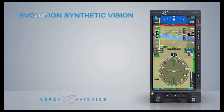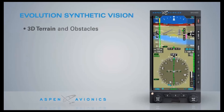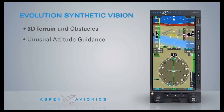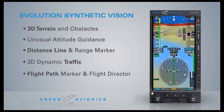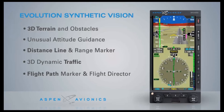Evolution Synthetic Vision includes all of the features aircraft operators expect of synthetic vision systems, including 3D terrain and obstacles, unusual attitude guidance, distance line and range marker, 3D dynamic traffic display, and flight path marker and flight director symbology. These display elements are all designed to interact dynamically and intuitively to give the pilot the most accurate positional and situational awareness.